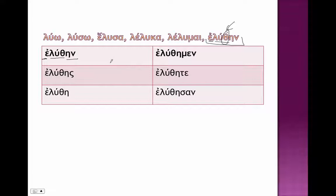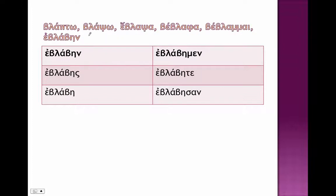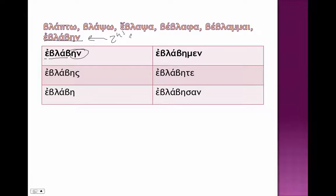This is basically how you conjugate it. The theta is usually your marker, but sometimes it doesn't show up — like in blopto, 'to harm.' Look at that: eblabein — there's our sixth principal part with no theta. You've got your epsilon augment, your stem, and your endings: eblabein, eblabeis, eblabe, eblabein, eblabete, elabeisan. The endings stay consistent. Some people will call these strong or second aorist passives, but I don't necessarily find that distinction all that useful when learning Greek.